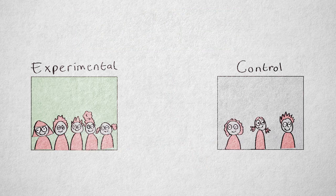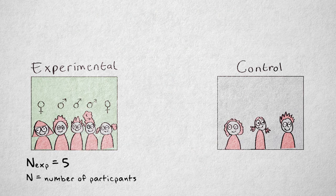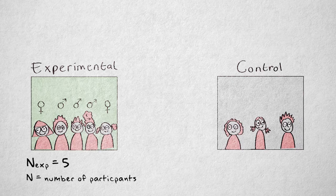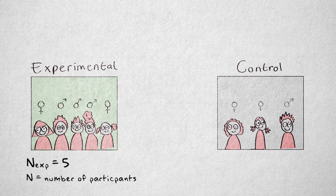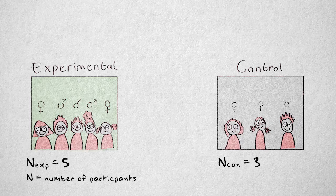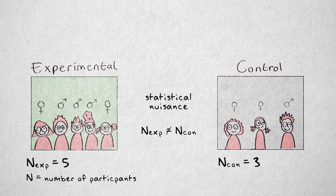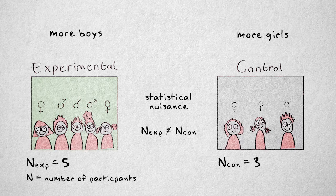The experimental group now consists of three boys and two girls, five children in all. The control group consists of one boy and two girls, three children in all. The problem is that the groups are not of equal size, which is a nuisance, statistically speaking. We also have a systematic difference in terms of sex.